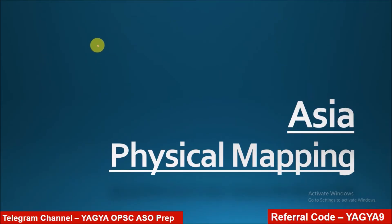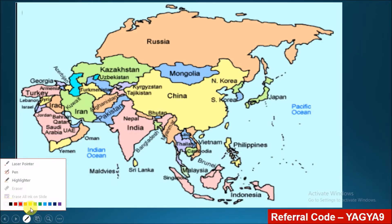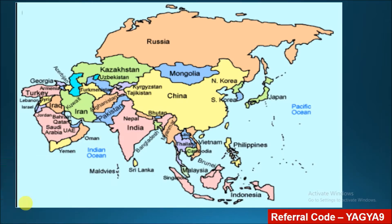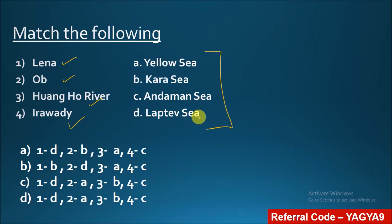Hi everybody, welcome to Yagya VM. In this class we will see a quiz on Asia political mapping and physical mapping. This quiz is presented by me, Yagya Sanipatra. This is the first question: you have to match the rivers — Lena River, Ob River, Huangho River, and Irrawaddy River — to the area where each one drains.